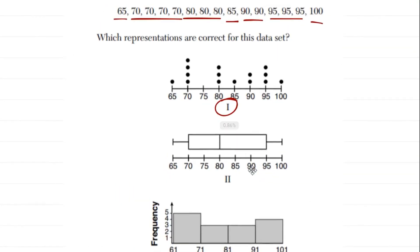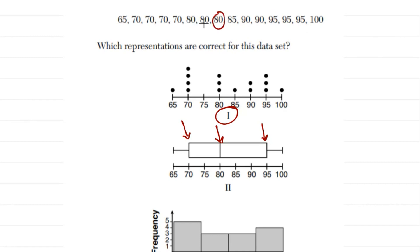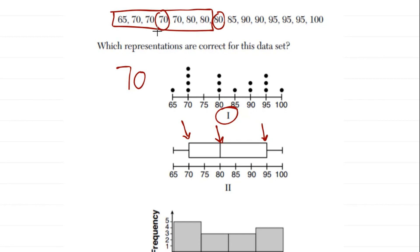For the box-and-whisker plot: the whiskers go to the highest and lowest points — 65 and 100 — correct. To find the first quartile, we split the 15 data points: seven from the left, circle the middle value, seven on the right. The first quartile is the median of the lower half. With an odd number, the median is simply the middle number, which is 70. That's where the first line of the box should be — and it is right at 70.